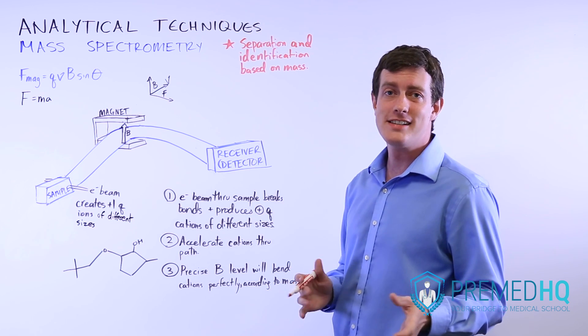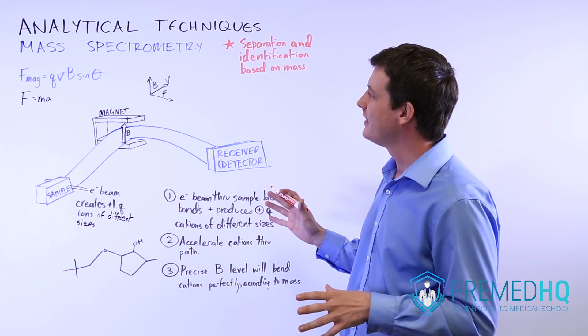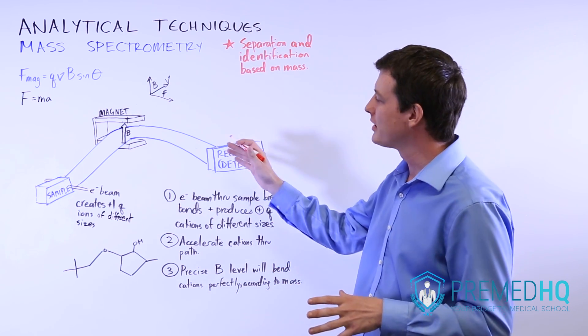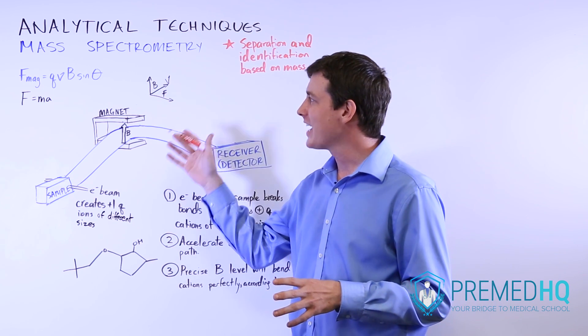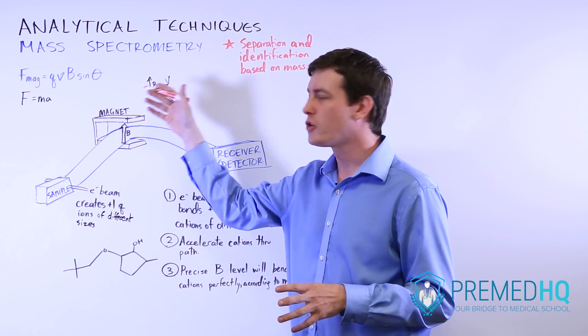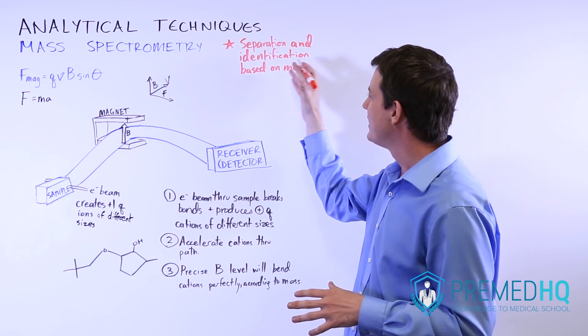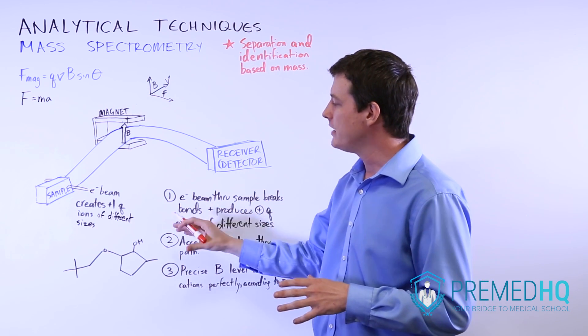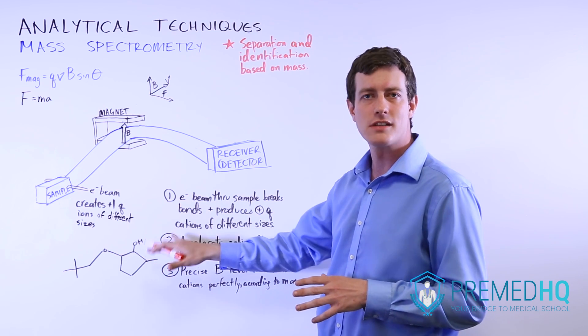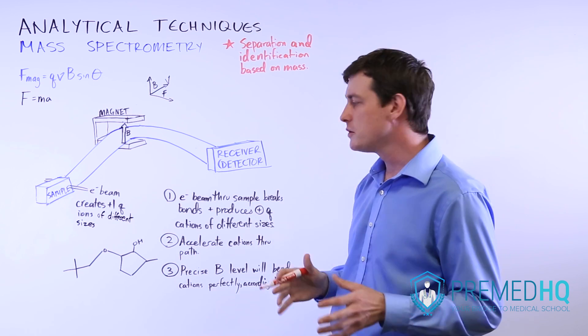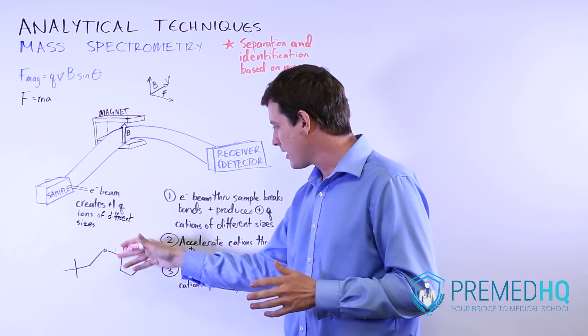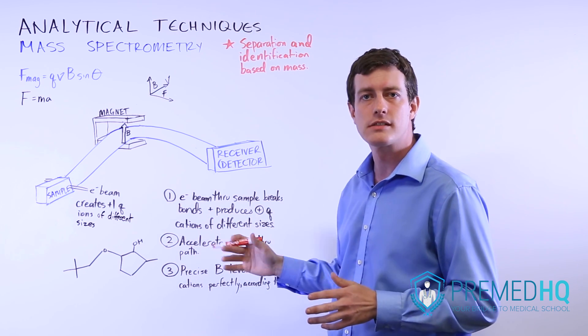Mass spectrometry is a novel analytical technique that uses interesting properties of electrons and force formulas in physics to help you separate and identify compounds based on the masses of their various components. Usually you'll use this for organic compounds but it can be used for other things.